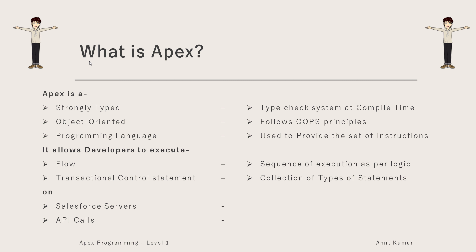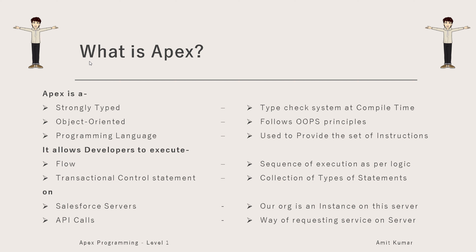With 'Salesforce servers,' we actually work on orgs when working in Salesforce, and our org is nothing but an instance of the Salesforce server. So any Apex code actually runs on the server itself. 'API calls' are the way of requesting services on the server — the server provides various services in the form of API calls, and we can take advantage of those services in Apex.